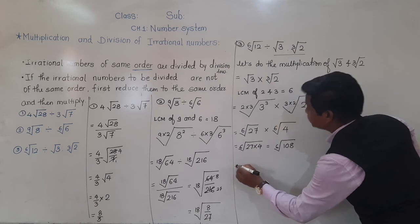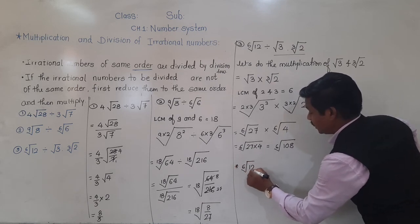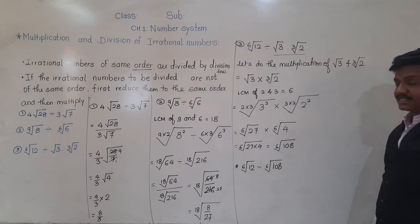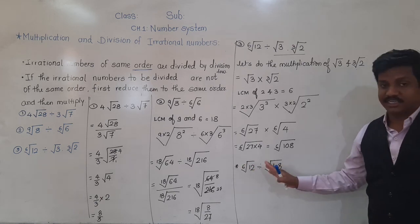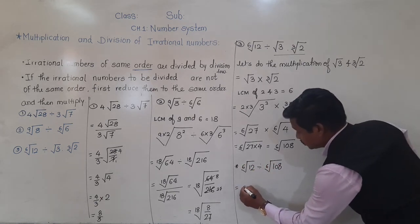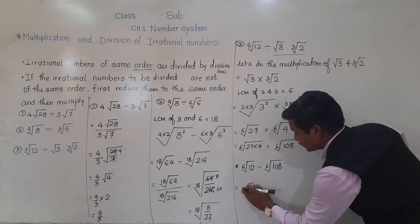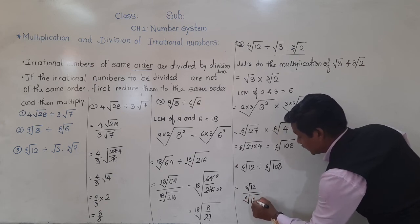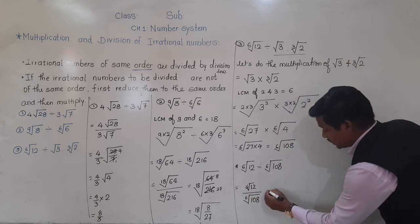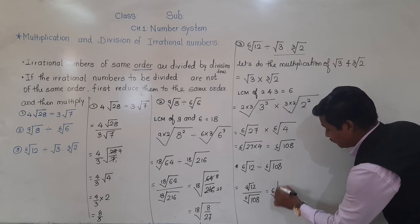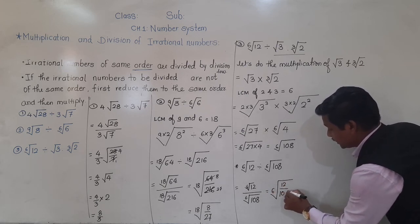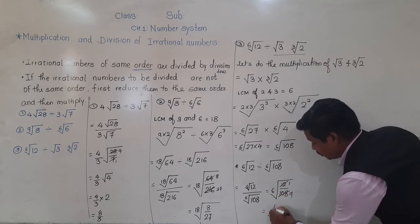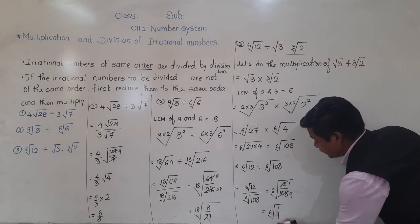Now come back to the division: 6th root of 12 divided by 6th root of 108. Now we have the same order — 6 — so we can divide directly: 6th root of 12 upon 108. And 12 divided by 108 simplifies to 1 upon 9. So the answer is 6th root of 1 upon 9.